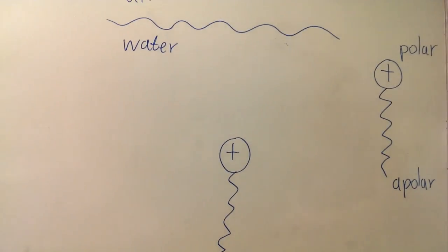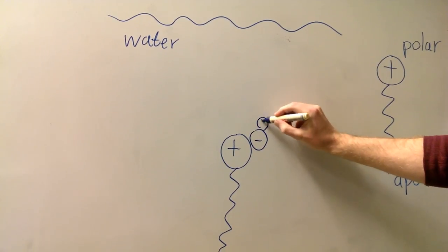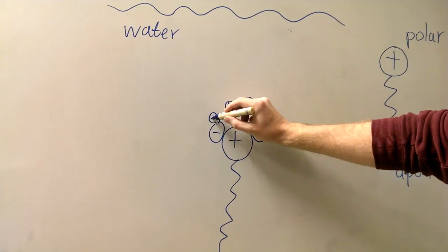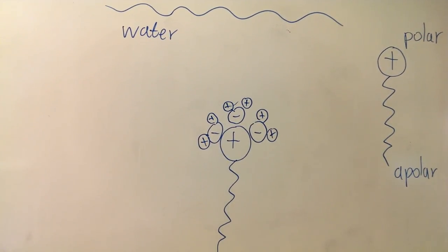Although hydrogen bonds reduce the internal energy of the body of water, the energy can be reduced even further by surrounding the soap molecule head. This kills the surface tension.